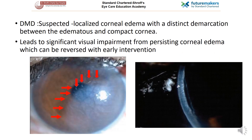The first indication is Descemet's membrane detachment (DMD). A DMD is suspected when there is localized corneal edema with distinct demarcation between the edematous and compact cornea. It leads to significant visual impairment from persisting corneal edema which can be reversed with early intervention. On slit lamp examination, if a thin slit is made, a thin flimsy membrane can be appreciated, which is the detached Descemet's membrane.